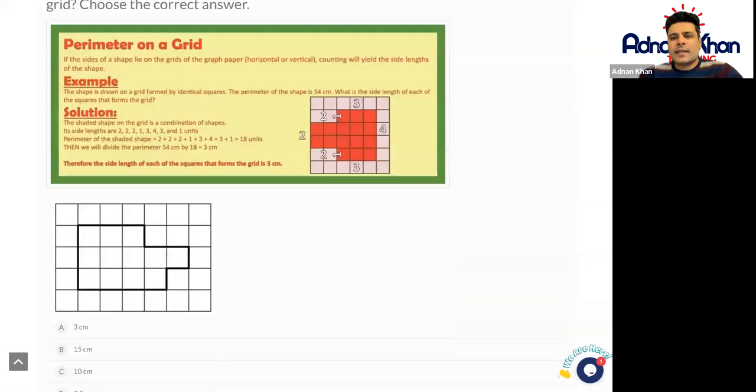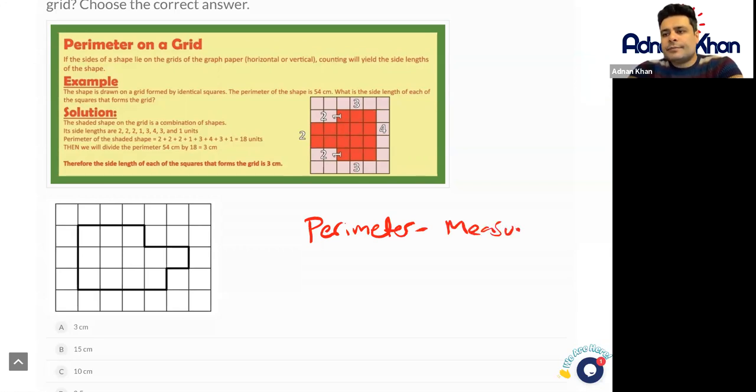Okay, so we've got a shape here. Now if you can see here, a perimeter is the measurement around a shape.